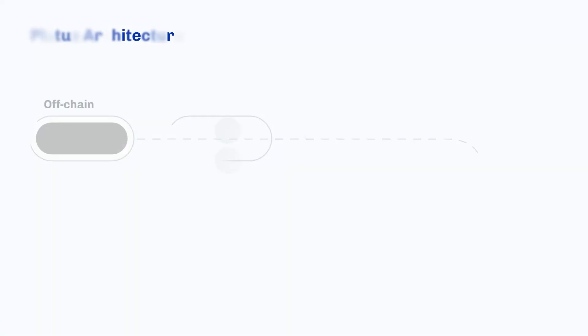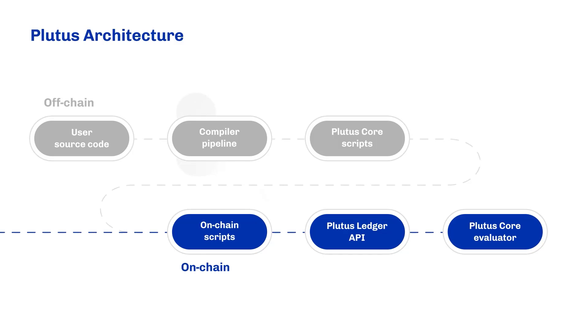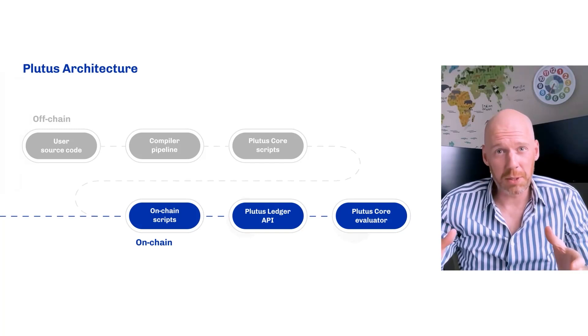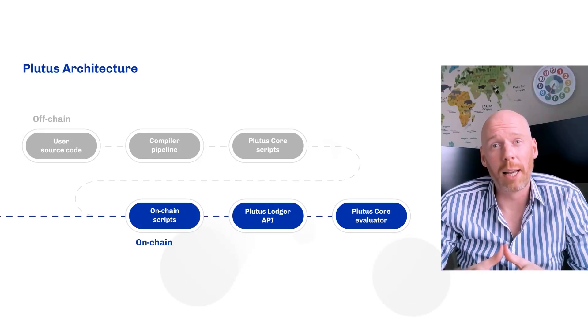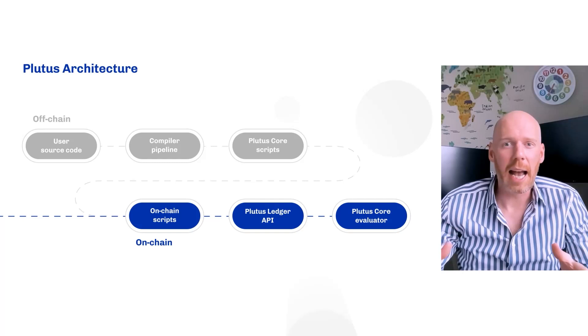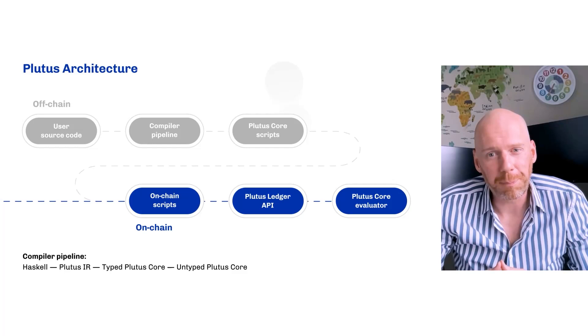Let's talk now about the Plutus architecture. I think the Plutus architecture is really interesting, and this slide walks you through the process of going from code to on-chain app. We start, of course, with developers. Developers write the source code to the dApp. All of the Plutus contracts are currently written in Haskell. We may support other languages in the future or allow DSLs to make things easier for certain use cases. But right now, we do them in a functional programming language called Haskell. So let's look at how you start with user code and you end up with an on-chain script — it starts with the compiler pipeline.